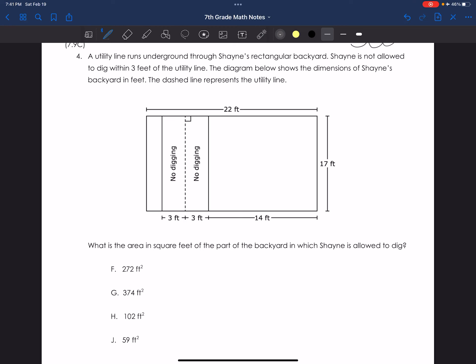Let's go through test question 4 to figure out why we missed this. A utility line runs underground through Shane's rectangular backyard. Shane is not allowed to dig within 3 feet of the utility line. The diagram below shows the dimensions of Shane's backyard in feet. The dashed line represents the utility line.